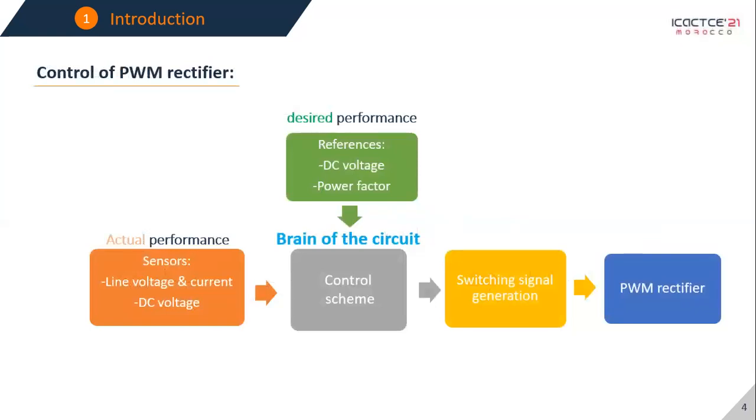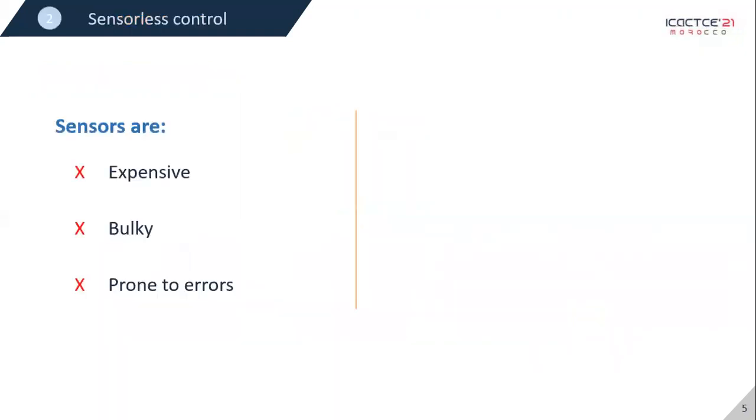We will talk about the control scheme in just a moment but for now let's talk about sensorless control. The problem with sensors is that they are expensive, they are bulky and they can be a source of errors. So it is of our best interest to reduce the number of sensors.